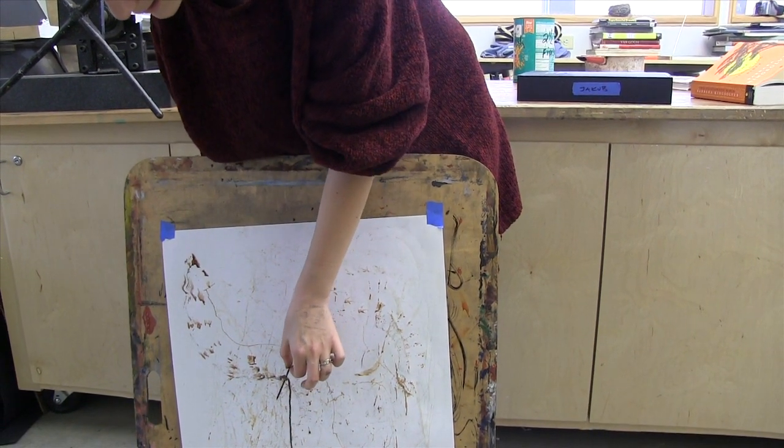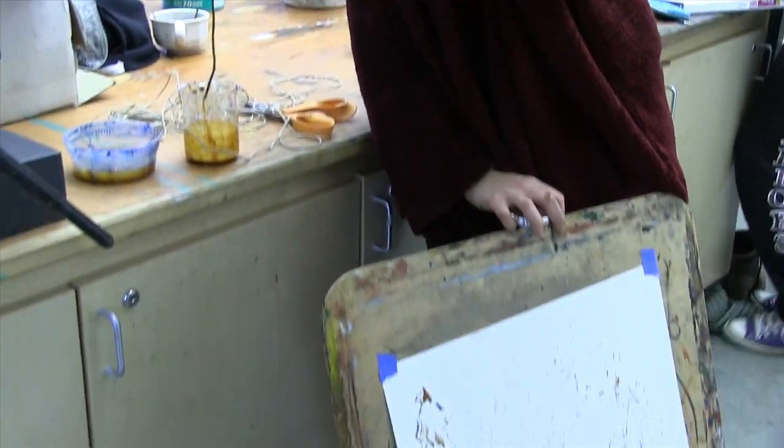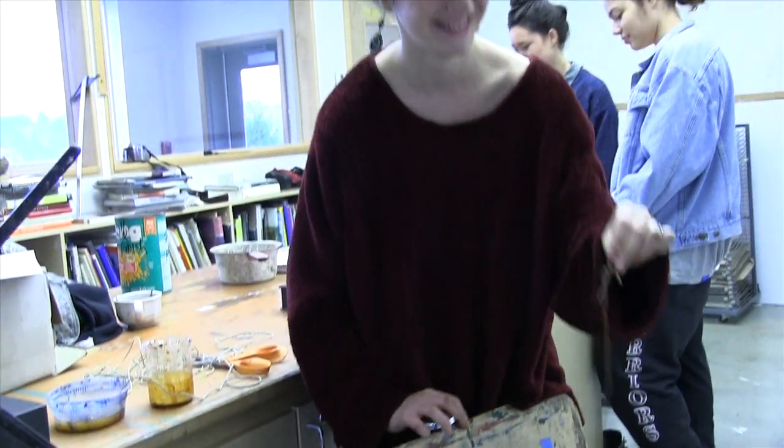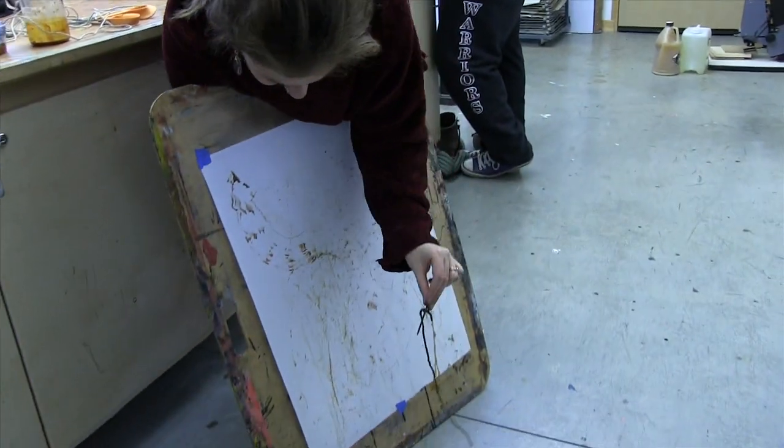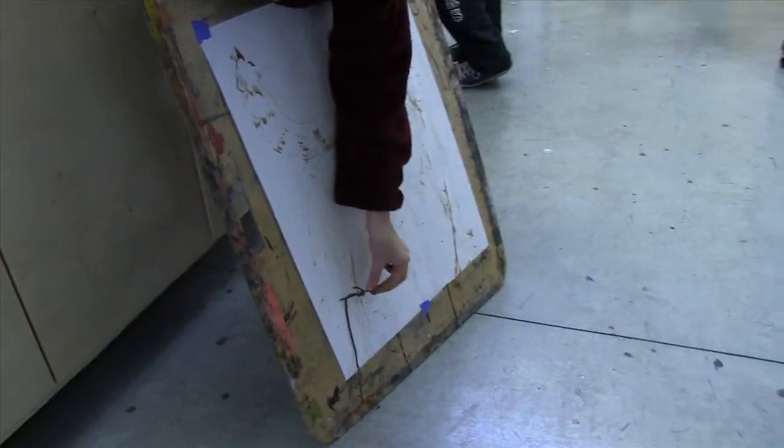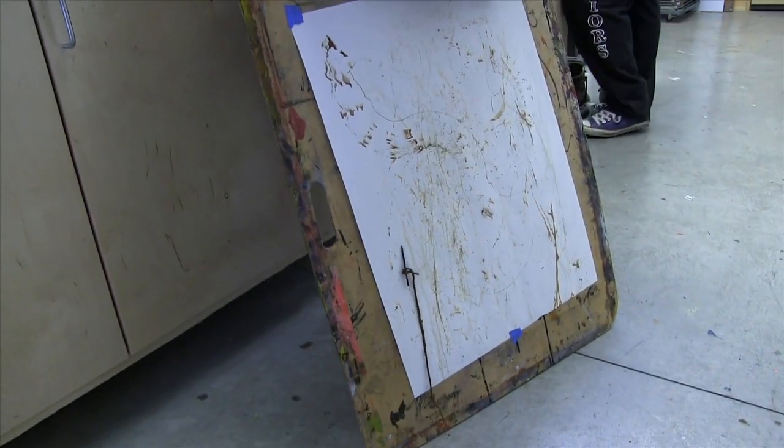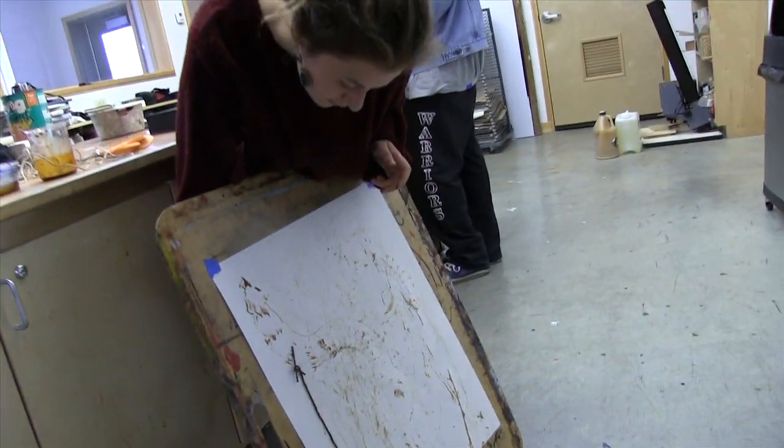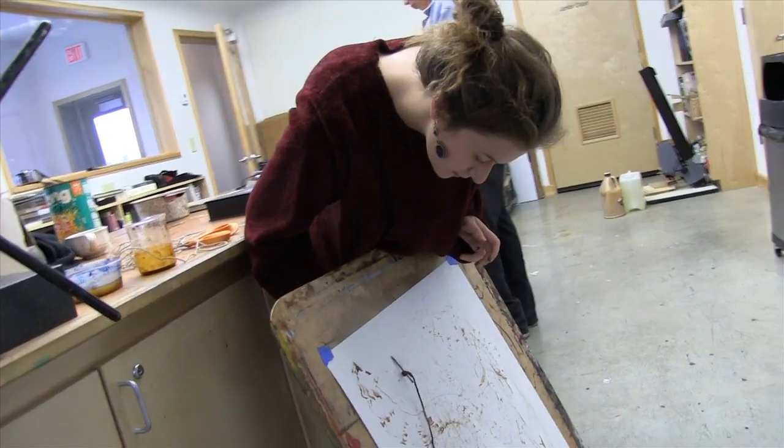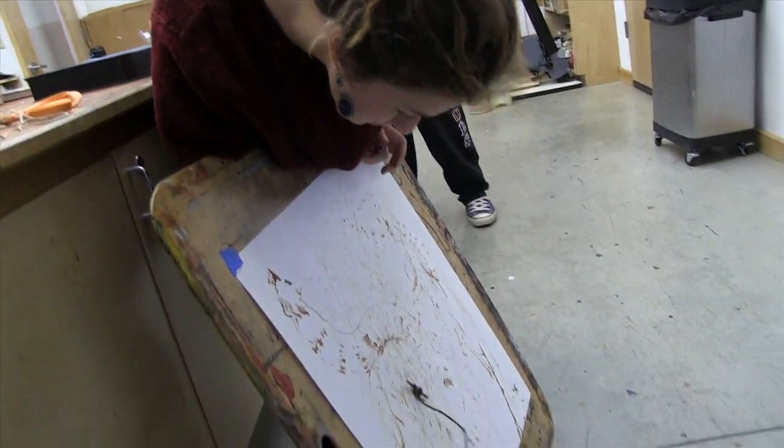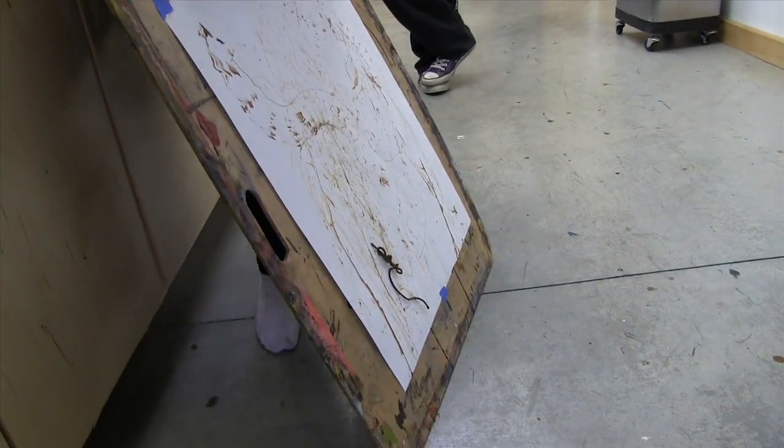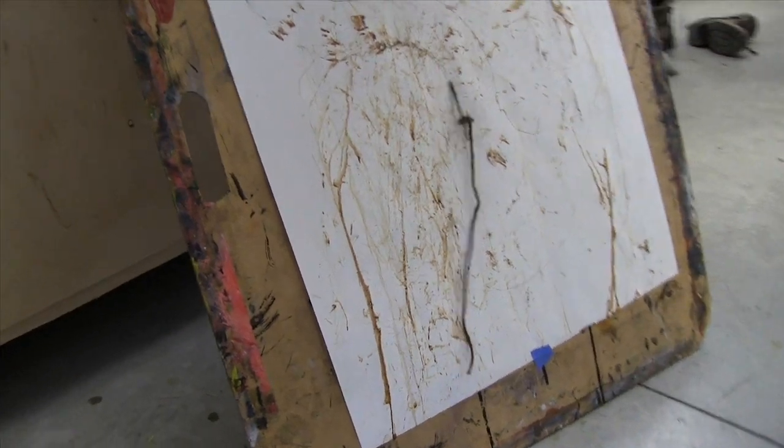I'm using the nails that I got the rust from. I took string and put it into the rust ink that I made. Now I'm using the string and the nail to create these lines with the magnet on the back of this board.